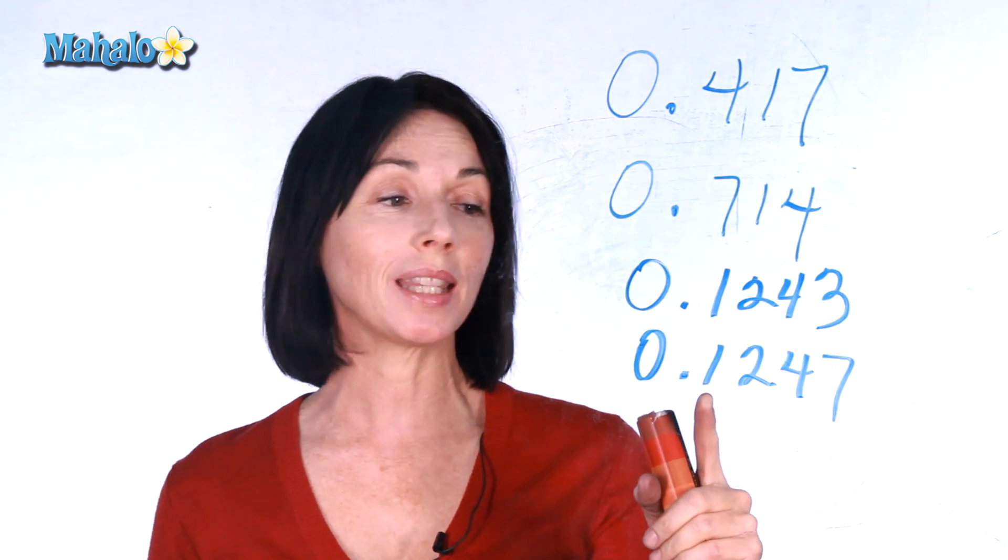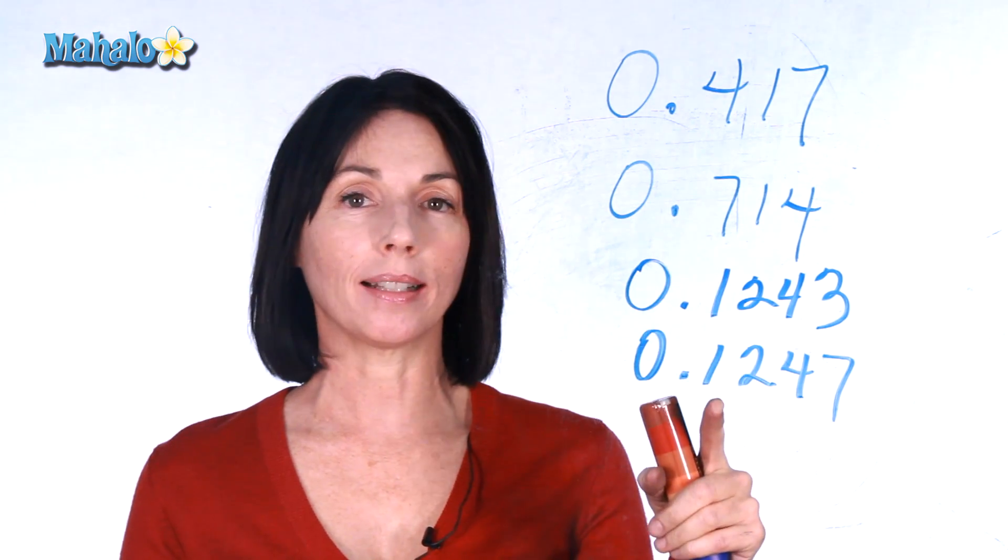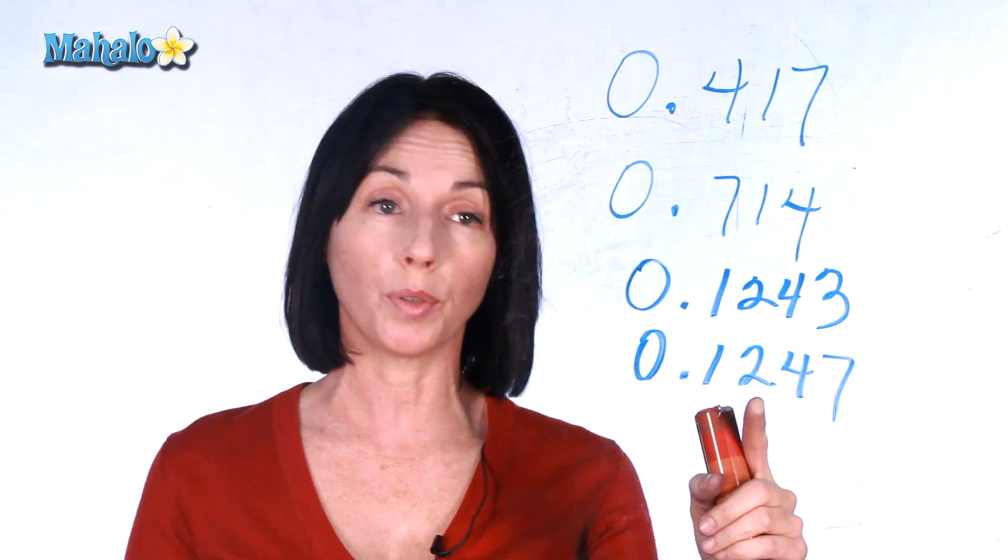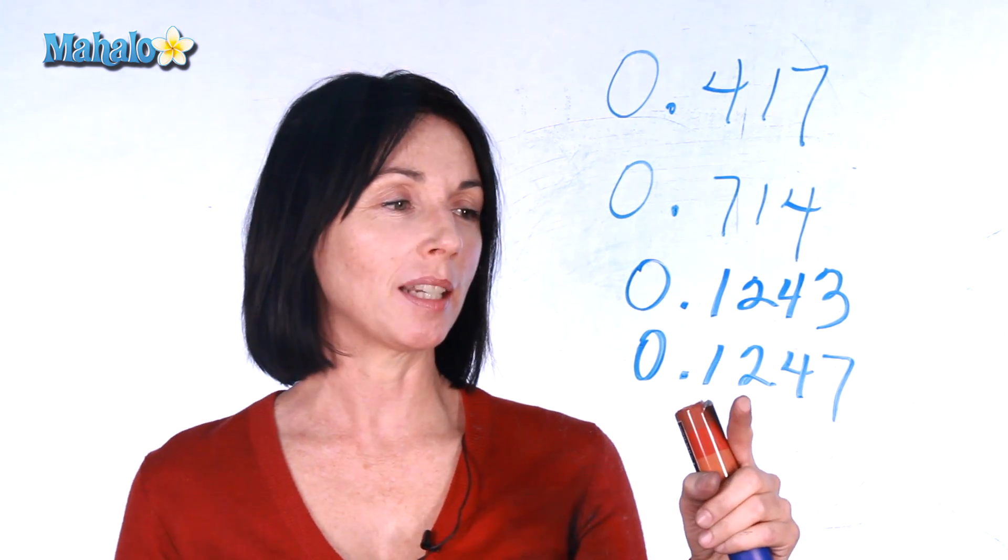So if we move to this position, this is the tenths position by the way, we have a one in each place so that doesn't tell us anything about which of these numbers is bigger. So we'll move over to the hundredths place, that's where these twos are. They're both twos so again we don't really have much information.